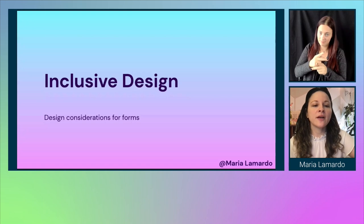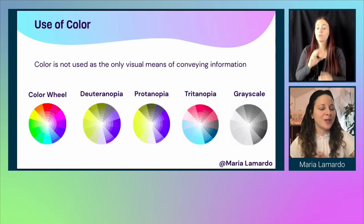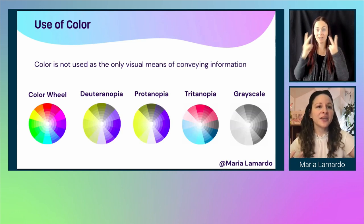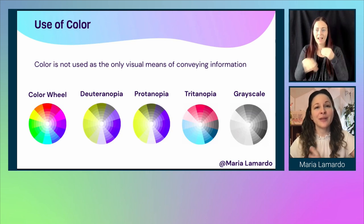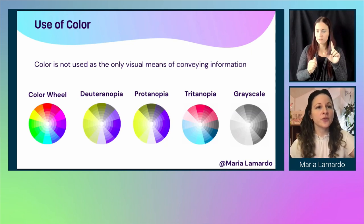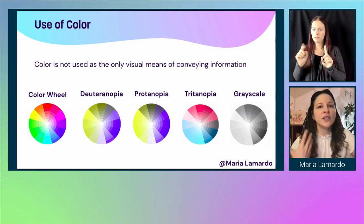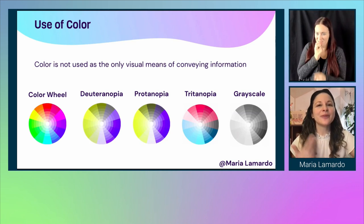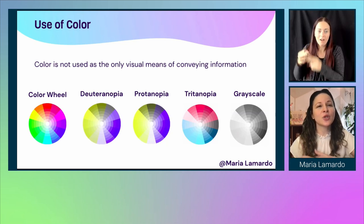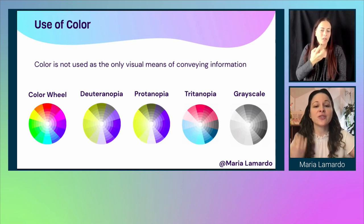Let's talk about some design considerations for forms. First, regarding color — color should not be used as the only visual means of conveying information. I've added color wheels on the slide displaying different types of color blindness: Deuteranopia, Protanopia, Tritanopia, and grayscale. You can see how different people might perceive colors, so you should not rely on color alone to provide important information, as it might be missed.